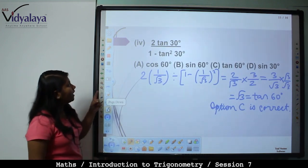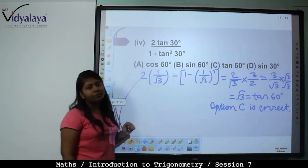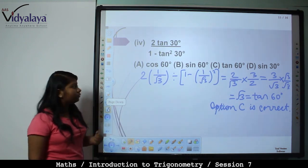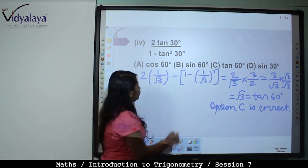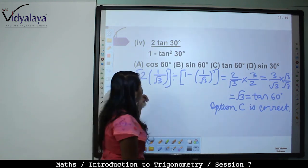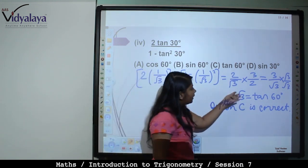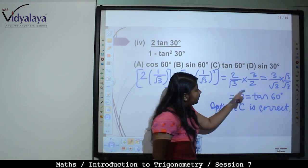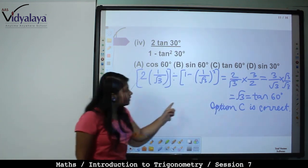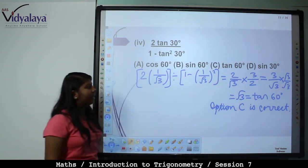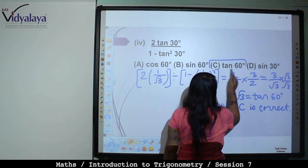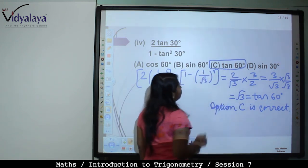Next: 2 tan 30 upon 1 minus tan square 30. Tan 30 value is 1 by root 3. So: 2 into 1 by root 3, divided by 1 minus (1 by root 3) whole square, that is 2 by root 3 into 3 by 2. Rationalize 3 by root 3 by multiplying and dividing by root 3, giving root 3, which equals tan 60. Hence option C, that is tan 60, is correct.